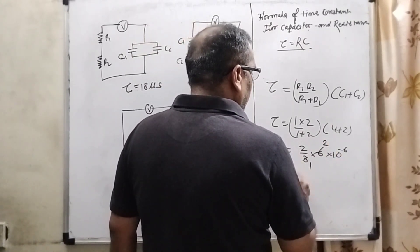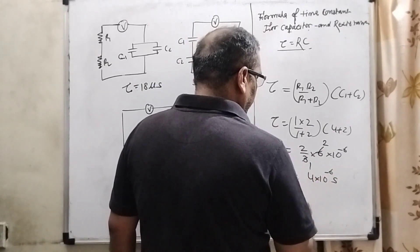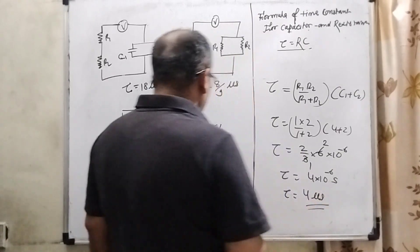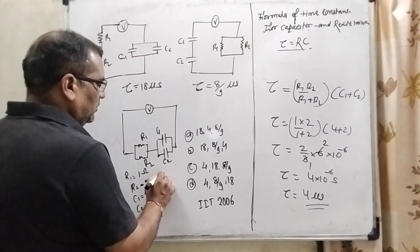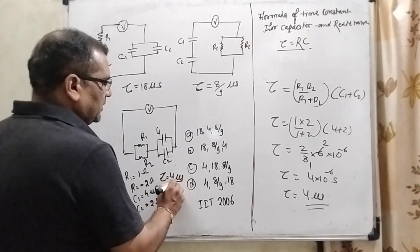3 times 1 is 3, 3 times 2 is 6. So tau equal to 2 times 2 is 4, into 10 to the power minus 6 seconds. Convert to microseconds, means 4 microseconds. For the third circuit, time constant is 4 microseconds.